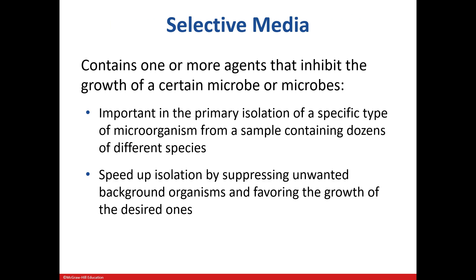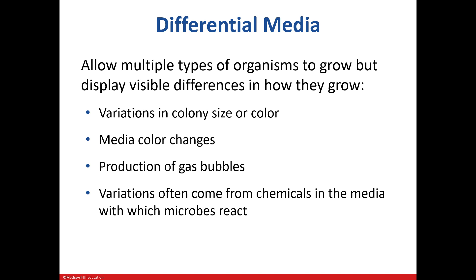We get even more specific with selective media. These have at least one ingredient that prevents the growth of a particular microbe. This medium can be used to isolate a pure culture from a sample that may contain multiple types of species, limiting the type of organisms we will see grow. Differential media has ingredients that allow us to visually see differences in bacteria on medium. Usually it's color differences that we see — those color differences may be in the colonies themselves or the actual media. In some cases we may see gas bubbles, which indicates the bacterium produces gas via the breakdown of a particular ingredient in the medium.